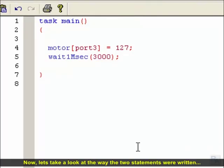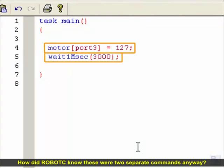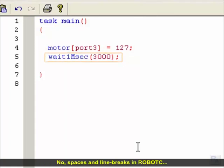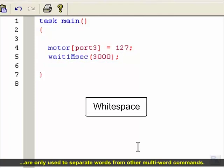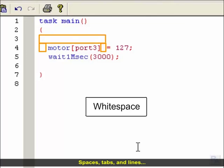Now, let's look at the way the two statements were written. How did Robot C know that these were two separate commands anyway? Was it because they appeared on two different lines? No. Spaces and line breaks in Robot C are only used to separate words from other multi-word commands. Spaces, tabs, and lines don't affect the way a program is interpreted by the machine.